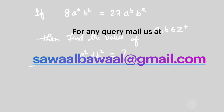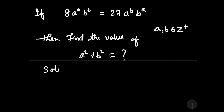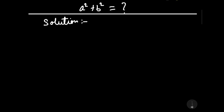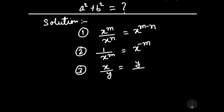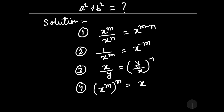Now let us start to solve this question. We must be aware of some formulas which we will use in the solution. First formula: x to the power m upon x to the power n equals x to the power m minus n. Second formula: 1 upon x to the power m equals x to the power minus m. Third formula: x to the power m, whole bracket to the power n equals x to the power m into n.